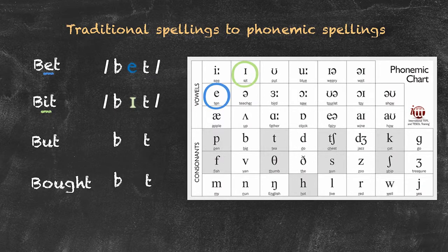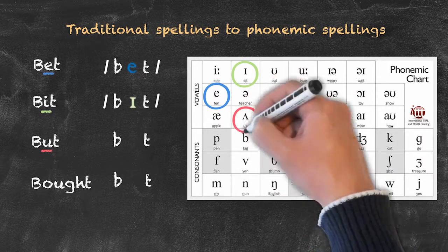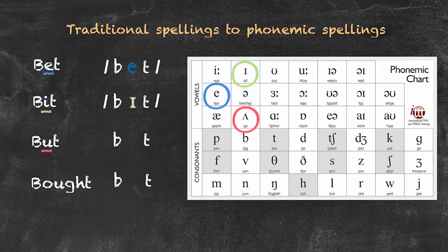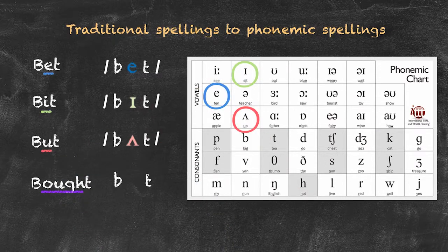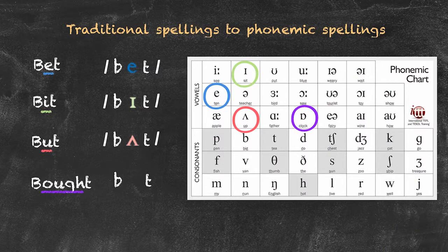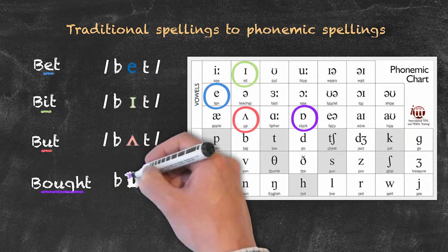Now with 'but,' we have to find the 'eh' sound, and that corresponds to this symbol here, as in 'cut,' but we simply put it into 'but,' and now we've got 'but.' Finally, we have 'bot,' and we have to find the phoneme for the 'ah' sound. We look here in our pure vowels and we see that this symbol is used in 'pot,' and that's the same sound as in 'bot.' So we know that we use this phoneme to arrive at 'bot.'